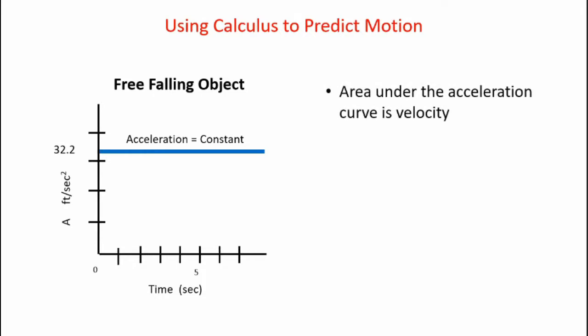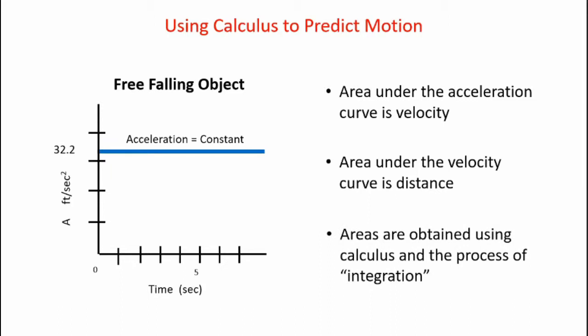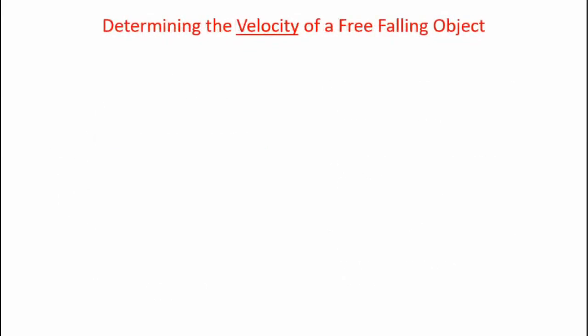In calculus, the area under the acceleration curve is velocity, and the area under the velocity curve is distance. We're going to be determining these areas using calculus and the process of integration. Now, here's how we determine the velocity of a free-falling object. The acceleration is 32.2 feet per second squared, and that's a constant.